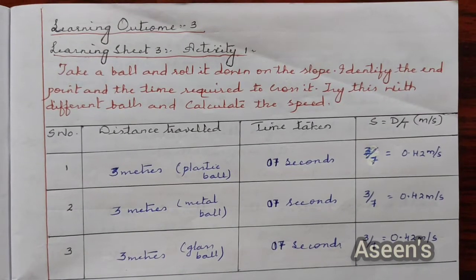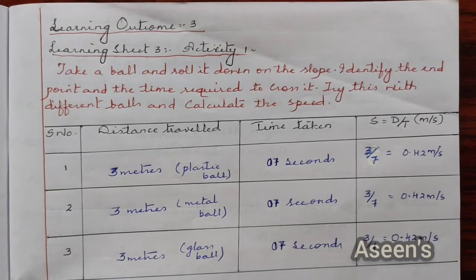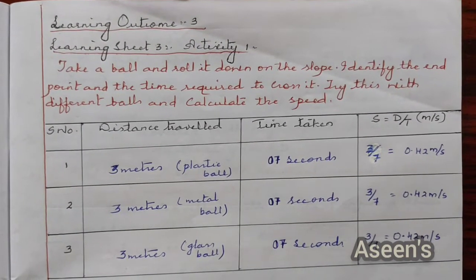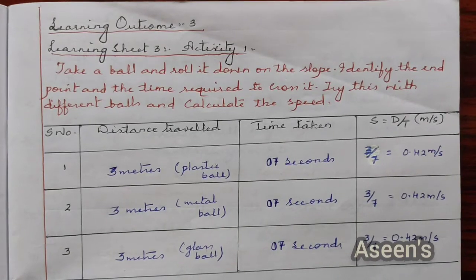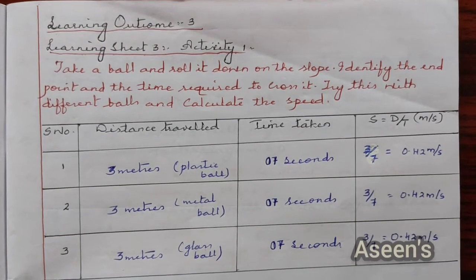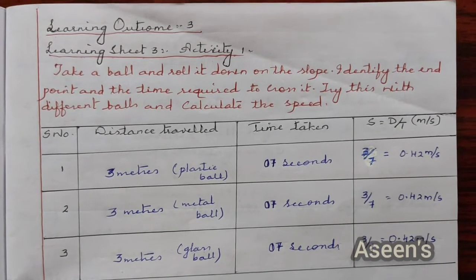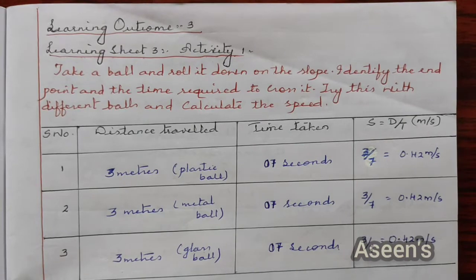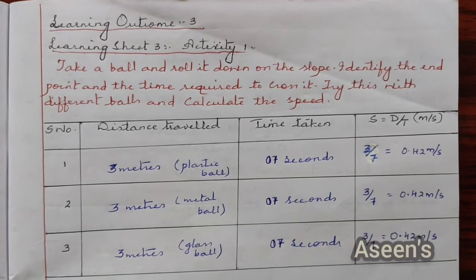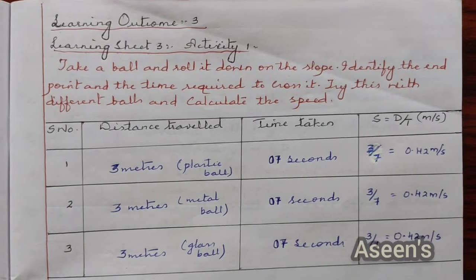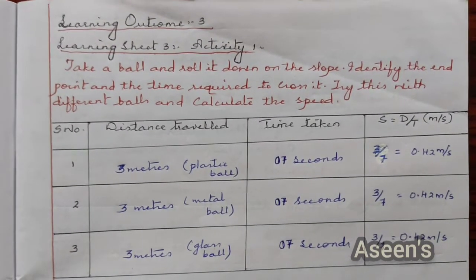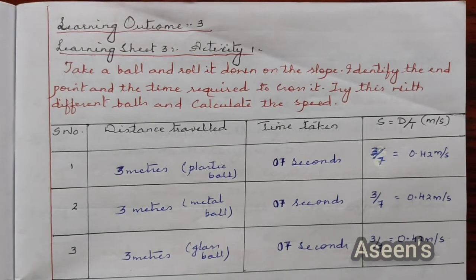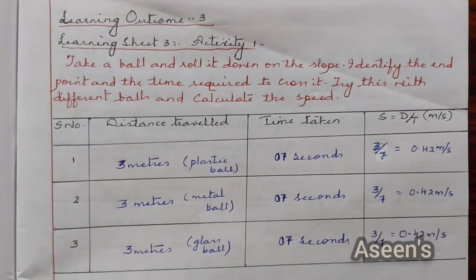Activity 1 under learning sheet 3. Take a ball and roll it down on the slope. Identify the end point and the time required to cross it. Try this with different balls and calculate the speed.